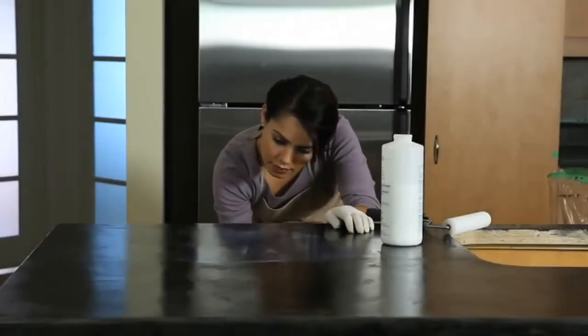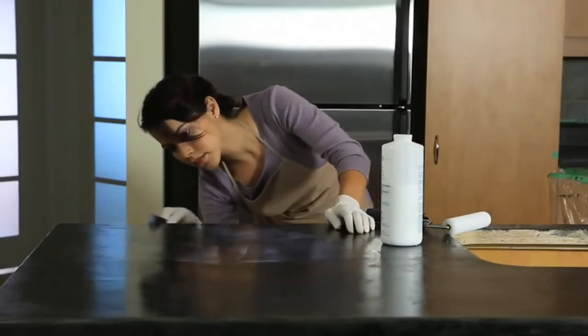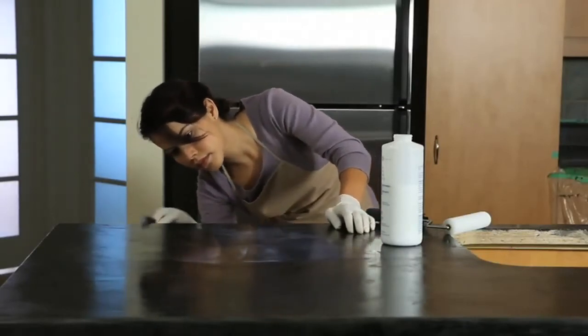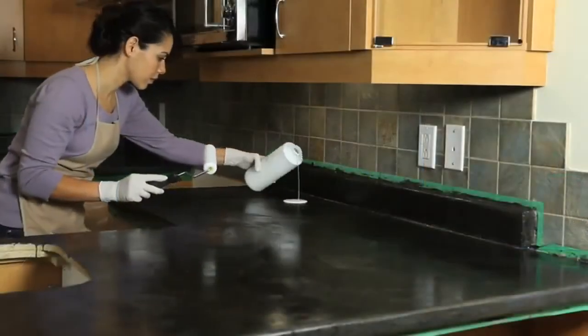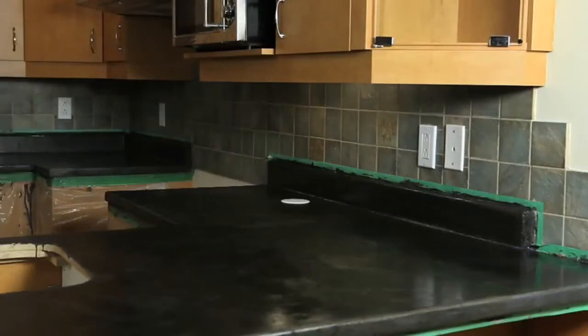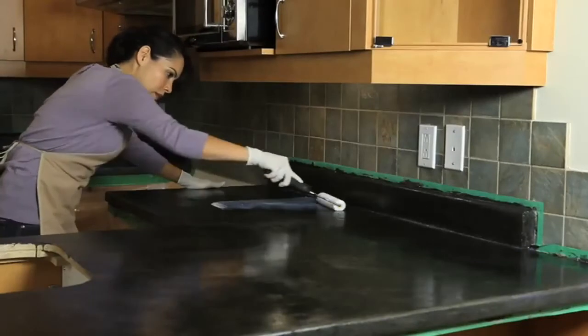You can use a small foam brush for the corners and backsplash, being careful not to allow drips or runs. Continue spreading the finish until the entire surface has been covered with an even coat, while occasionally back rolling the finish using only the weight of the roller.